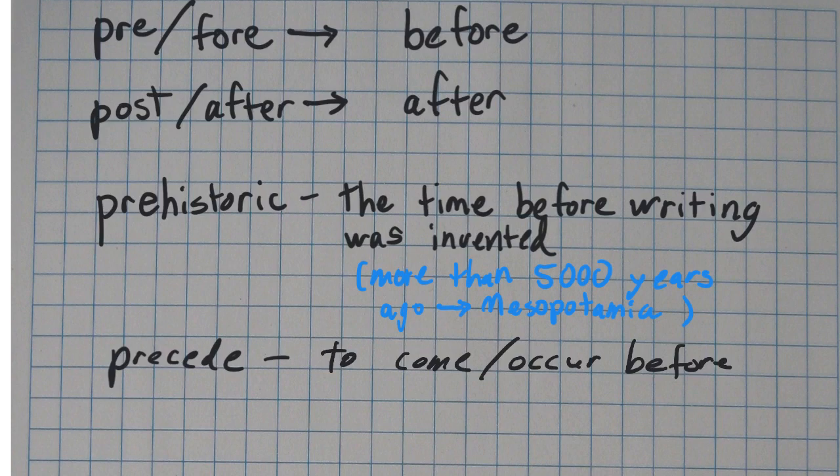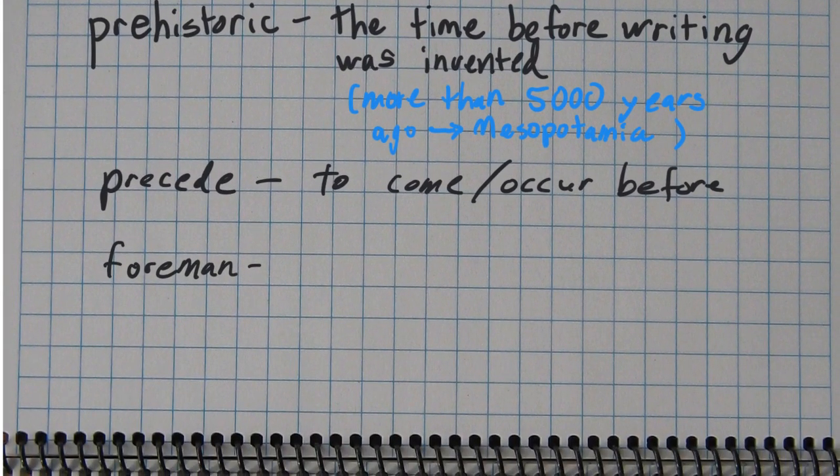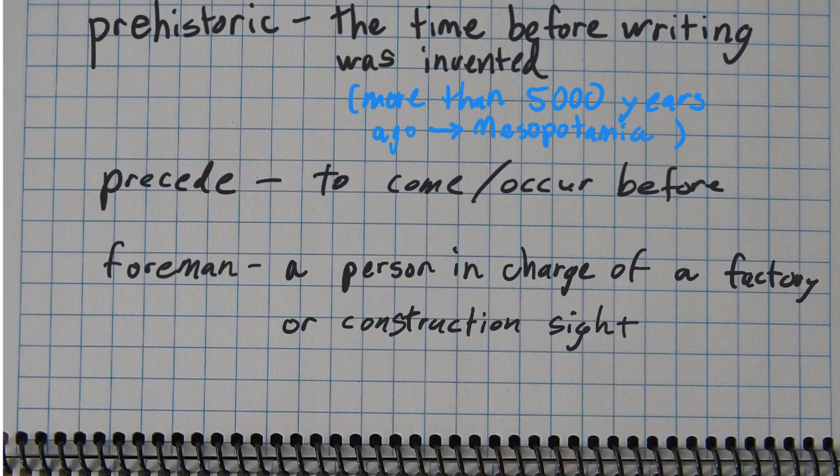Next, let's do foreman, which actually this word doesn't really fit the pattern or the prefix, but this actually refers to the person in charge of a factory or a construction site is the foreman.